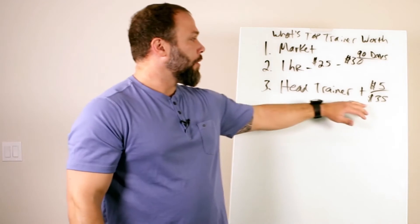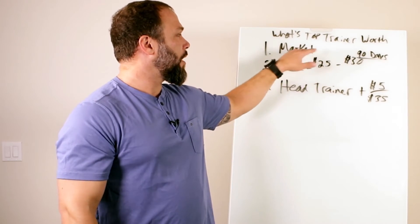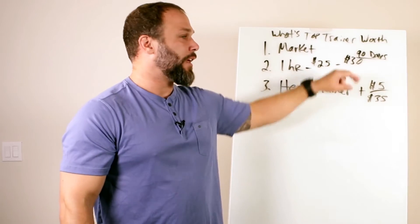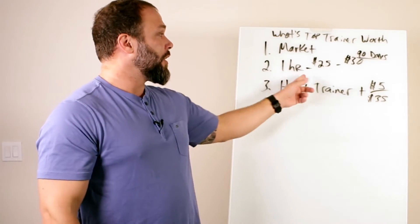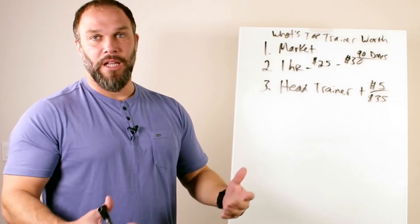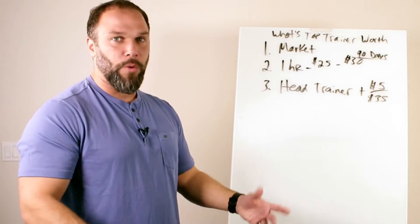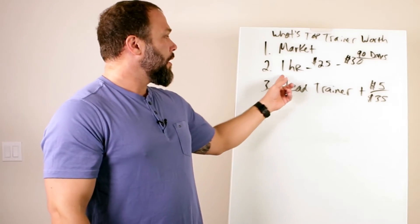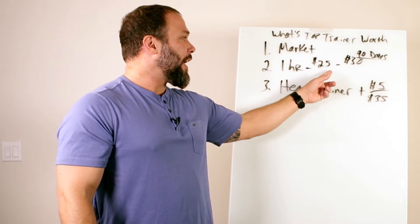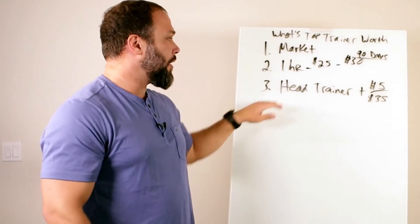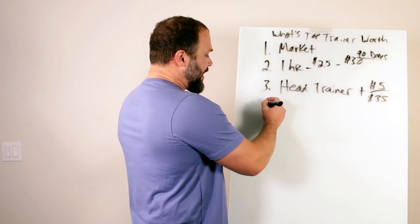So you want to find out what the market's paying the trainers. You can pay a little bit less than above average for one-on-one training because they're not selling the clients, they're not finding them, they're not having to work the floor at the gym. Start them off at $25 for the hour. After 90 days, take them up to $30. Our head trainer was getting $35.